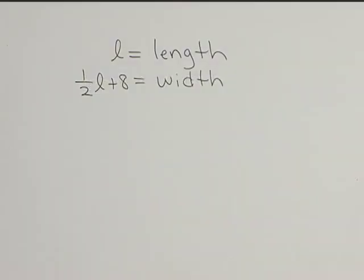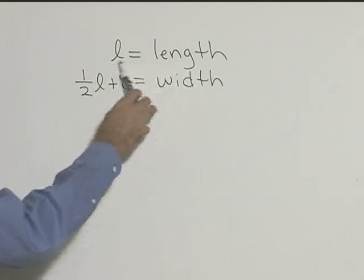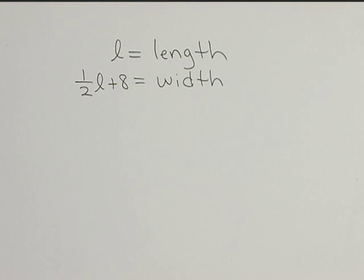Let's look at the second sentence in our problem. It says the width is 8 feet longer than half the length. So let's start with length and let L be our length. Let's work backwards through that part of the question.